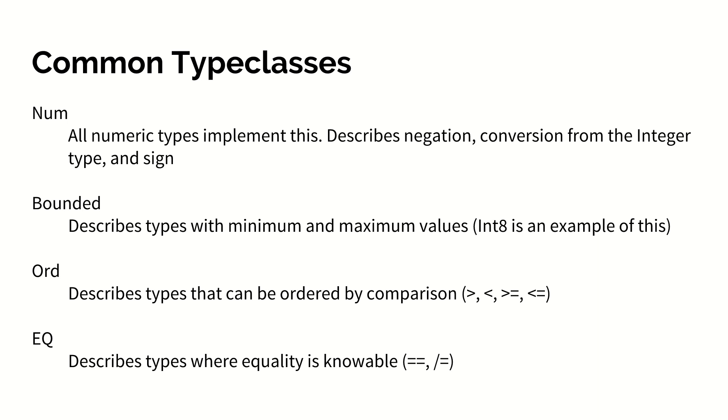The bounded type class describes types that have a minimum and maximum. For example, int 8 has a certain minimum negative value and a maximum positive value because it is limited to a certain number of bits.